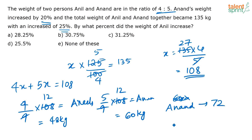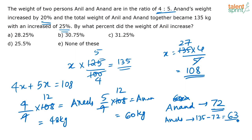Now we need to find how much Anil's weight increased. The total weight is 135 and Anand's weight is 72, so Anil's new weight is 135 − 72 = 63 kg. Earlier, Anil's weight was 48 kg. The percentage increase in Anil's weight is (63 − 48) / 48 × 100 = 15/48 × 100.